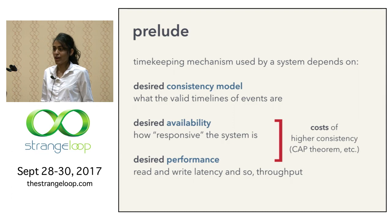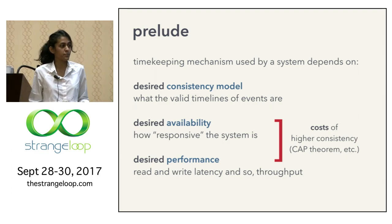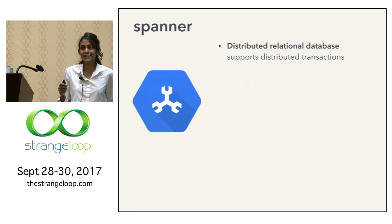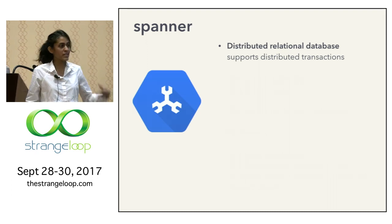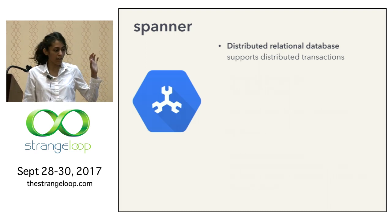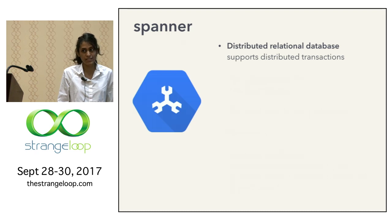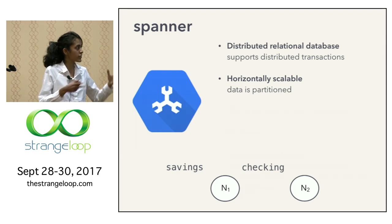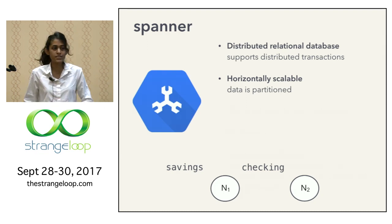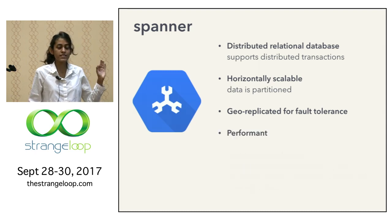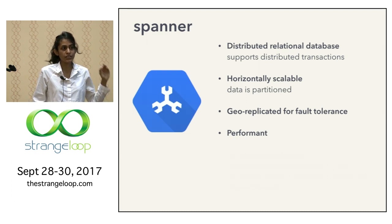The first system we're going to talk about is a strongly consistent data store built by Google called Spanner. Spanner is a distributed relational database that allows for complex schemas and distributed transactions. It is horizontally scalable — your savings table in a banking system may live on one partition and checking on another. It's geo-replicated for fault tolerance, and Spanner really cares about being performant, which is an important design consideration.